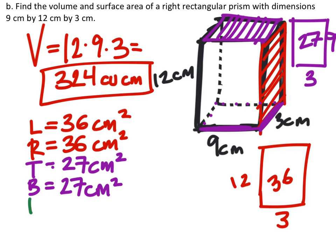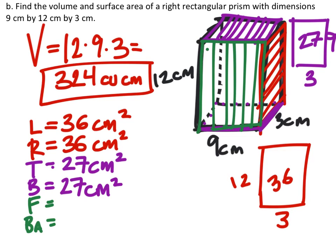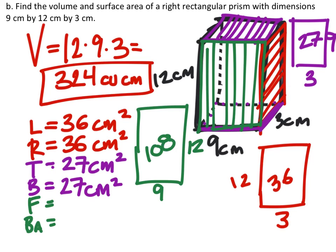Now we're looking at the front face and also the back face. So we just need to find the area of these two rectangles. So this is our front face, which if we draw it, that would give us a 12 by 9 rectangle, which would mean that the surface area is 108 centimeters squared.